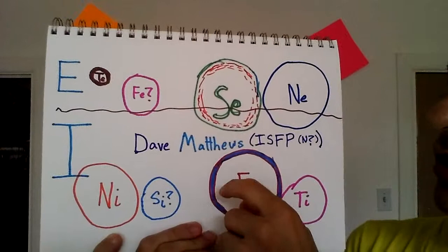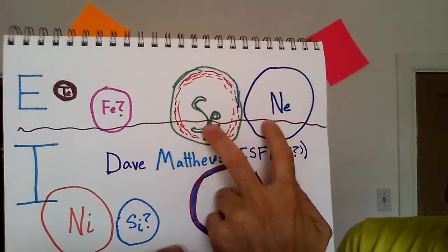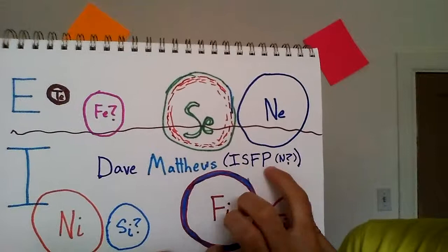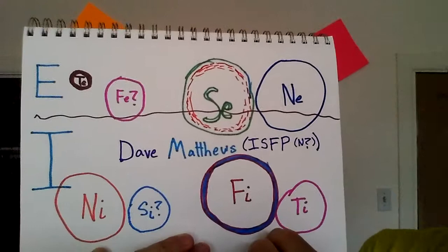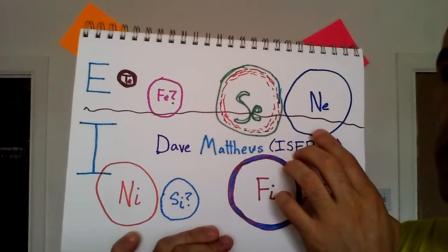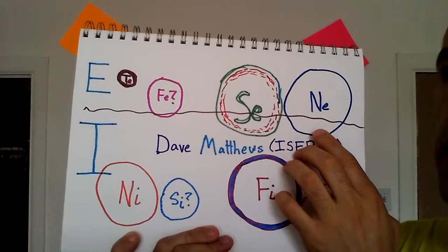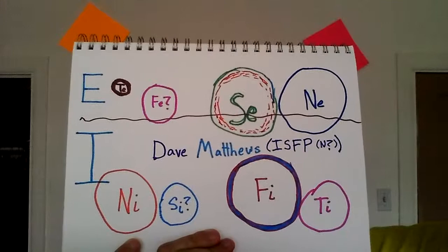The most notable thing about Dave Matthews, in my opinion, is that he has really strong extroverted perception. His extroverted sensation is really strong, and I'm calling him an ISFP. He may be an N, but I'm going with S. I'm pretty sure he is an ISFP, but the reason it could be confusing is because you have in Dave Matthews an instance where his N is also really strong. It just means that there's a certain type of person who sort of consumes extroverted perception and does it very effectively, and Dave Matthews is definitely one of these people.